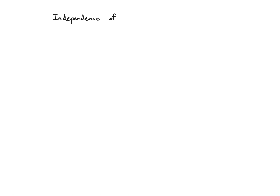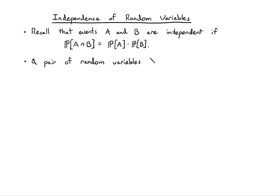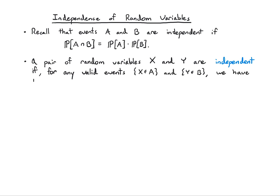Now that we know a little bit about pairs of random variables, let's talk about how independence applies to these objects. Remember from way back in the beginning of the course, we said that events A and B are independent if the probability of their intersection can be written as the product of their individual probabilities: P(A ∩ B) = P(A) × P(B). A pair of random variables X and Y are called independent if for any valid events — X belonging to A and Y belonging to B — the probability of the intersection of these events equals the product of their individual probabilities.